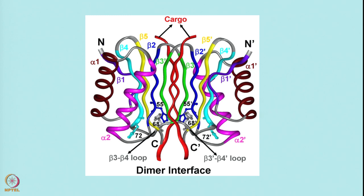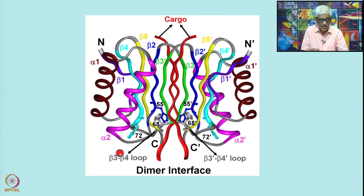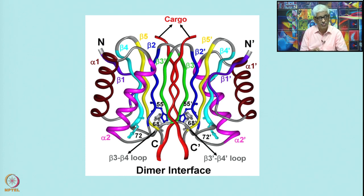This was studied using a small peptide as a cargo. The protein consists of helices and a beta structure — largely helical with loops and beta sheets. At the dimer interface there is a beta3-beta4 loop where the cargo is bound and held together by these interactions. Any perturbation at the dimer interface will affect the binding efficacy, and any perturbation in the dynamics of the dimer will also affect the binding efficacy.